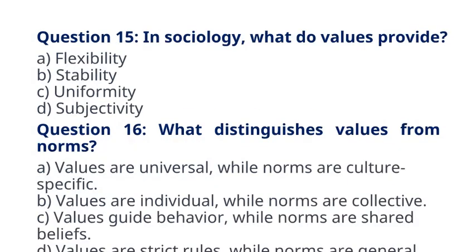Question 15. In sociology, what do values provide? A. Flexibility. B. Stability. C. Uniformity. D. Subjectivity. The correct answer to question 15 is option B, Stability. Explanation: Values provide stability within society by establishing consistent principles and beliefs.